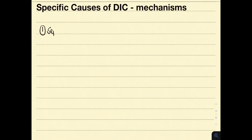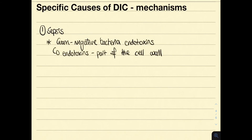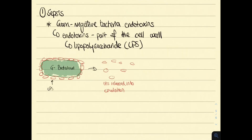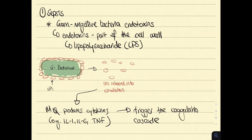Let us discuss the pathophysiology of specific causes of DIC. Starting with sepsis: gram-negative bacteria contain endotoxins, which are part of the cell wall, also called lipopolysaccharides or LPS. The LPS is released into circulation — for example due to bacterial death. Macrophages recognize this and produce cytokines including IL-1, IL-6, and TNF. These can trigger the coagulation cascade and result in DIC.